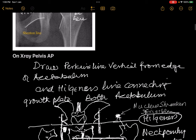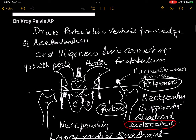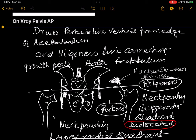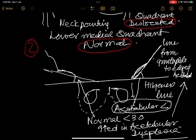To summarize: draw Perkins line and Hilgenreiner's line connecting both growth plates. If the head or neck is pointing in the upper lateral quadrant, it is dislocated; if pointing in the lower medial quadrant, it is not dislocated. Secondly, draw the angle between the roof of the acetabulum and Hilgenreiner's line — this is the acetabular index. Normally less than 30 degrees means no acetabular dysplasia; more than 30 degrees means you will have to address the dysplasia.